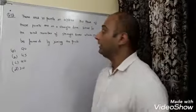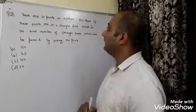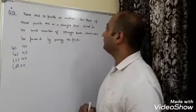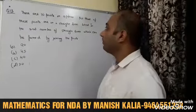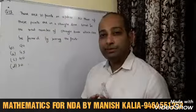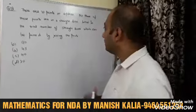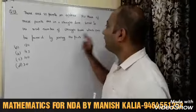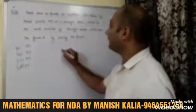Question number 13: there are 10 points in the plane, no three of these points are collinear (on a straight line). What is the total number of straight lines that can be formed?